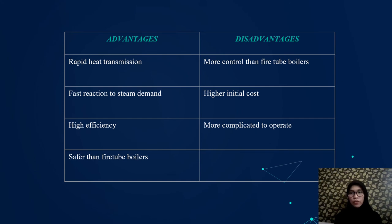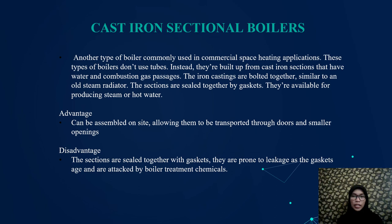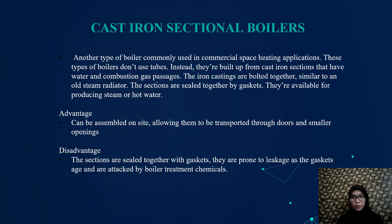Other than fire tube and water tube boilers, there is also the cast iron sectional boiler, another type commonly used in commercial space heating applications. This type of boiler does not use tubes and is available for producing steam or hot water. An advantage is that it can be assembled on site, allowing it to be transported through doors and smaller openings. A disadvantage is that the sections are sealed together with gaskets, which are prone to leaking when attacked by boiler treatment chemicals.